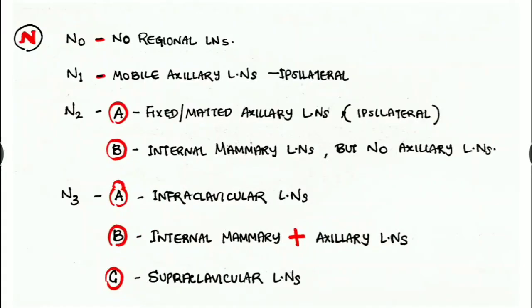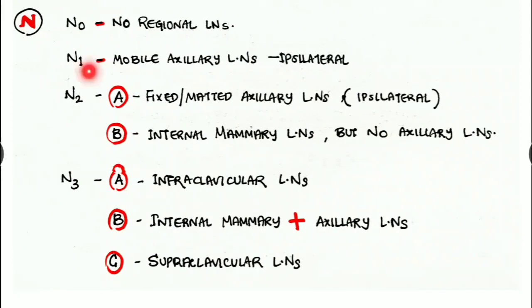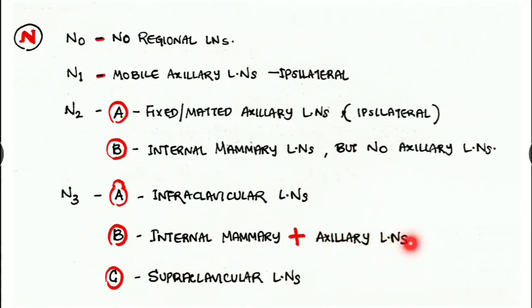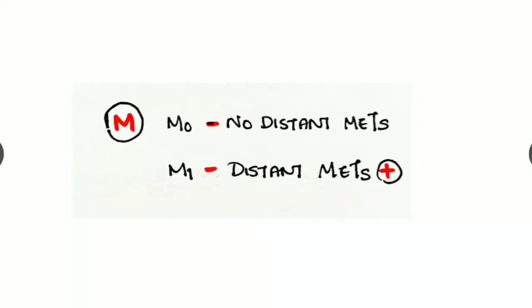N means nodes. N0 - no regional lymph nodes. N1 - where there are mobile axillary lymph nodes in the same side. N2A - there are axillary lymph nodes which are fixed or matted. B are internal mammary lymph nodes but in the absence of any axillary lymph nodes. N3A - infraclavicular lymph nodes. N3B - both internal mammary as well as the axillary lymph nodes are present. And N3C - the supraclavicular lymph nodes.